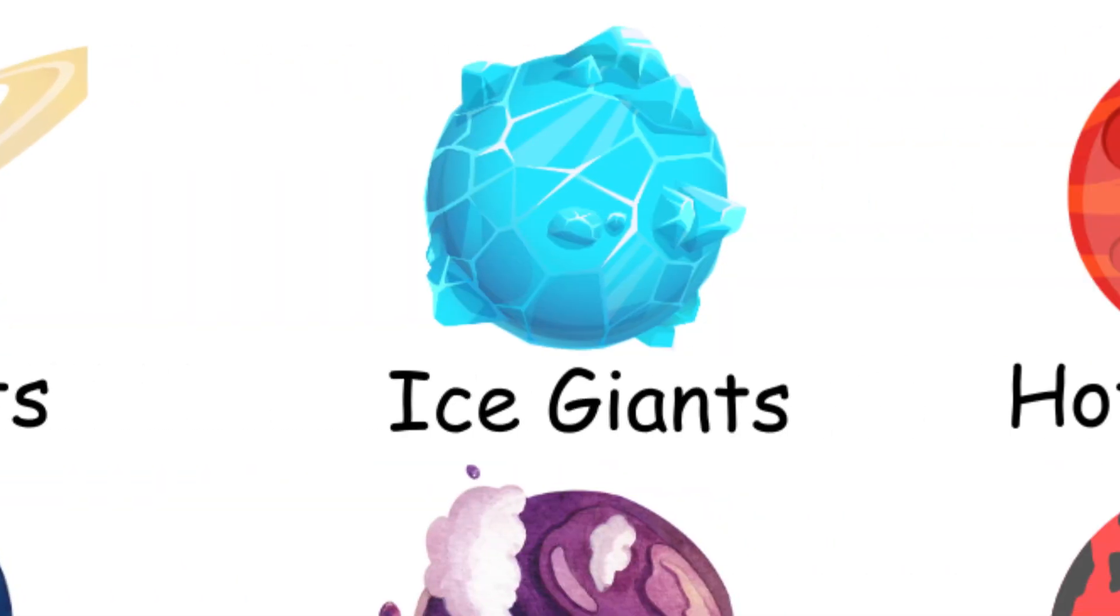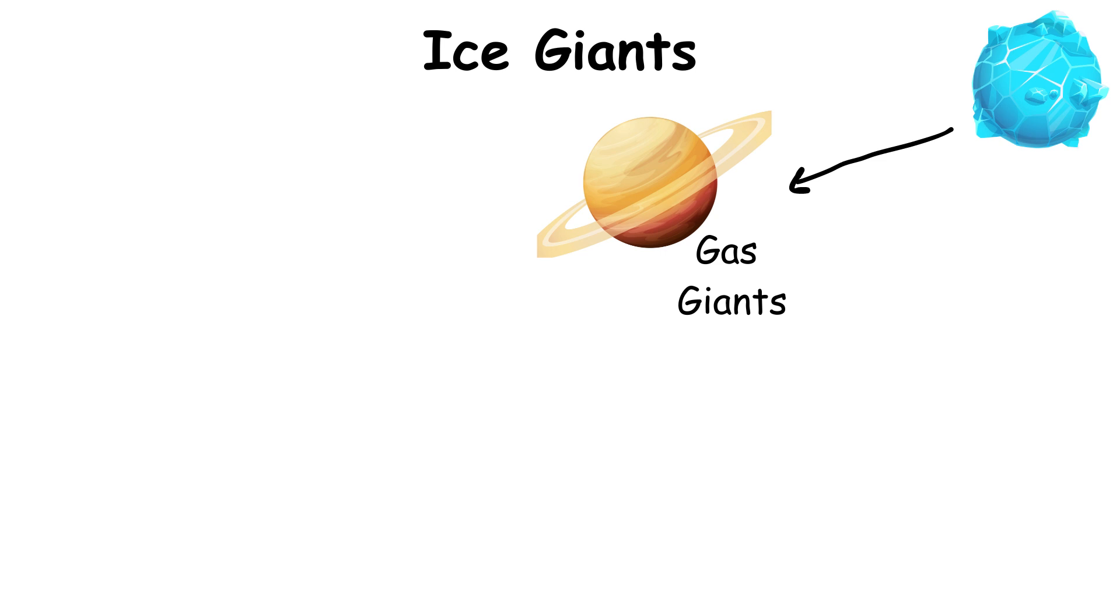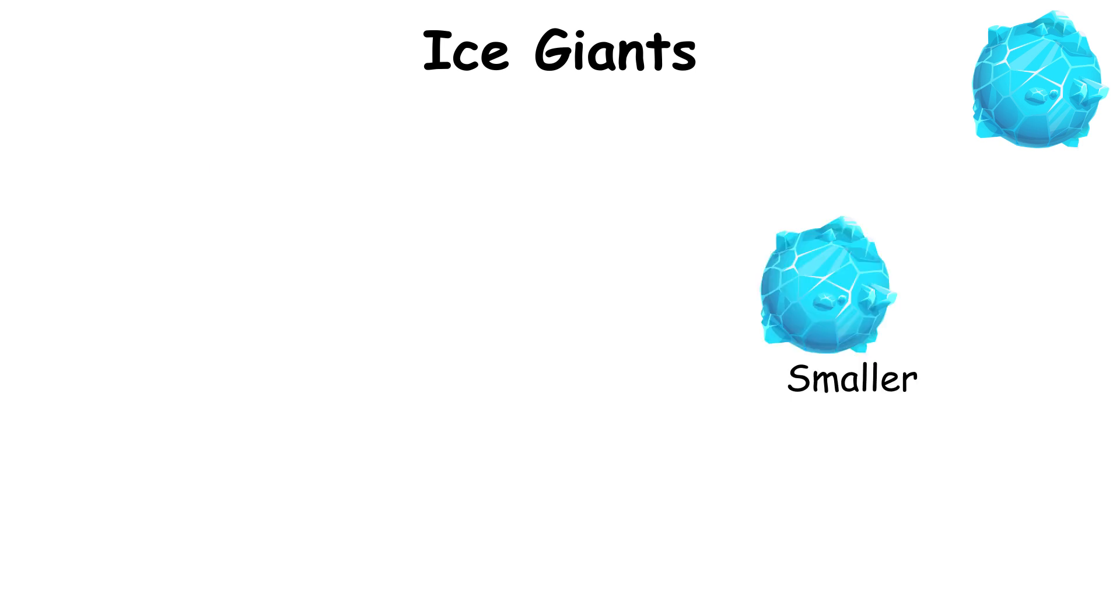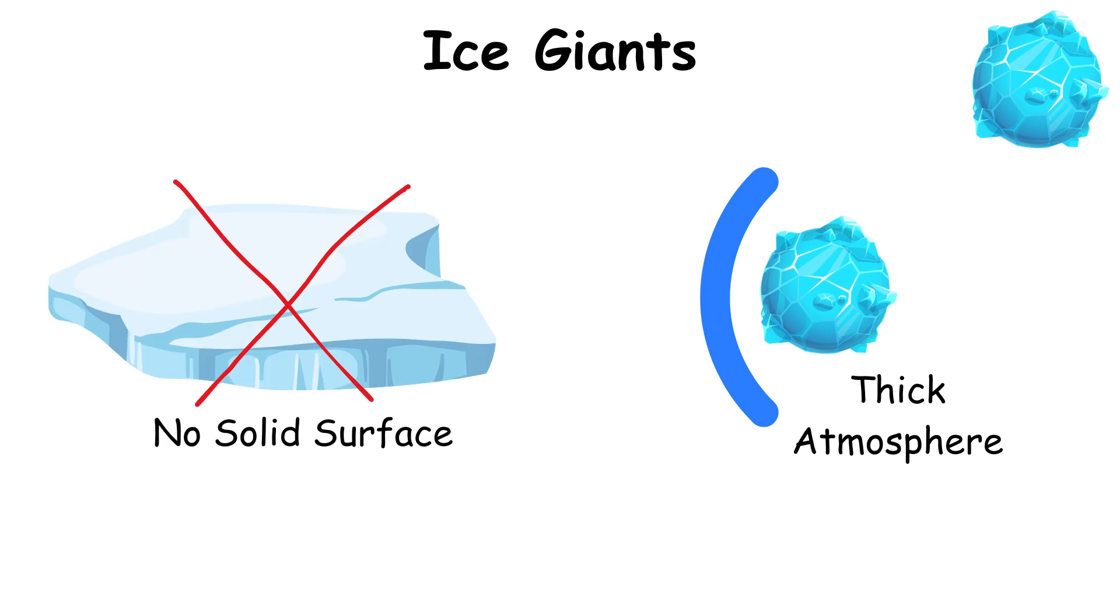Ice giants are similar to gas giants but contain a higher proportion of ices like water, methane, and ammonia in their composition. They have a smaller overall size compared to gas giants. Ice giants also have thick atmospheres and no solid surface.